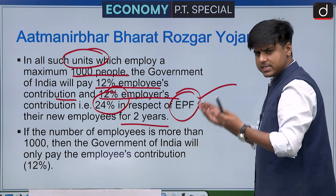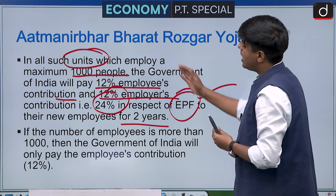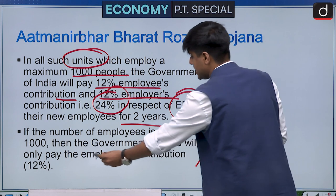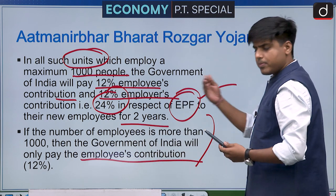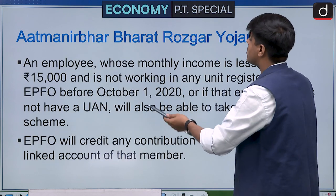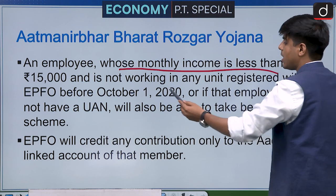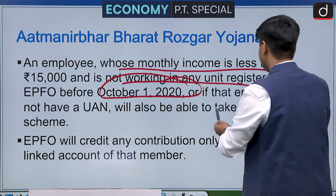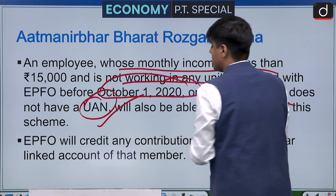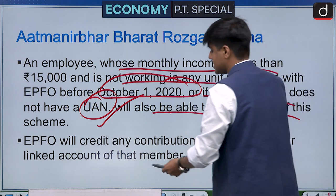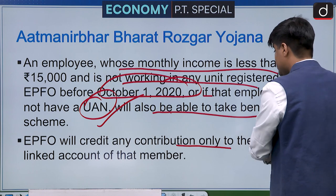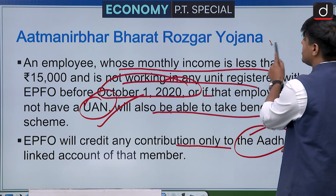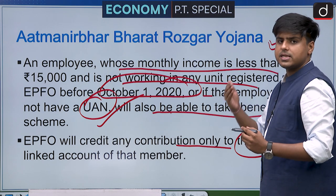If the number of employees is more than 1,000, the government will only pay the employee's contribution; the employer must pay their own share. Employees whose monthly income is less than Rs. 15,000 and who were not working in any EPFO-registered unit before 1st October 2020, or do not have a UAN, are eligible. EPFO will credit contributions to the Aadhaar-linked account of the member.